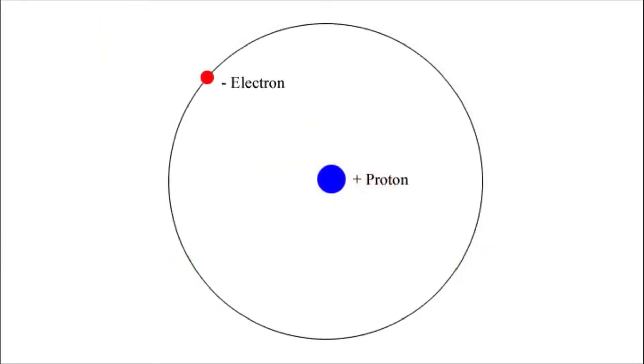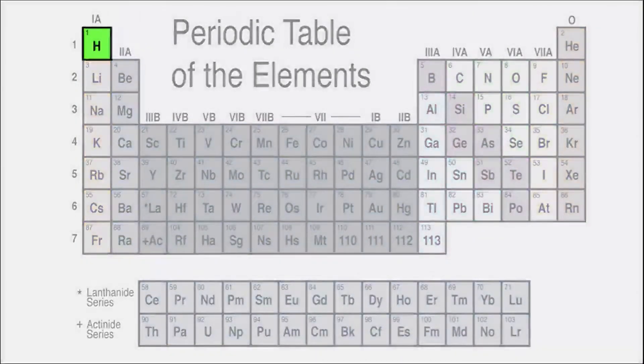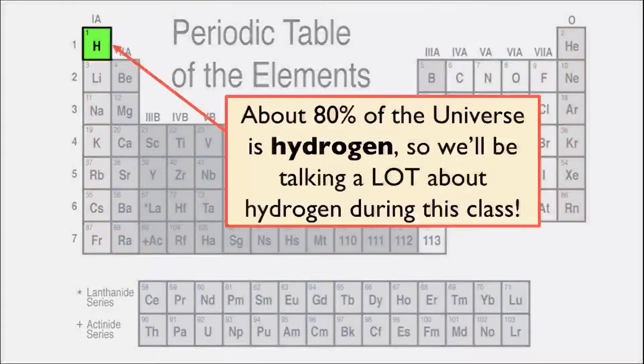But what if we looked at an even simpler atomic model? One that had only one proton and one electron? This would be an atom of the element hydrogen, which can be found here on the periodic table. In fact, about 80% of the entire universe is hydrogen, so we'll definitely be talking about hydrogen a lot in this class.